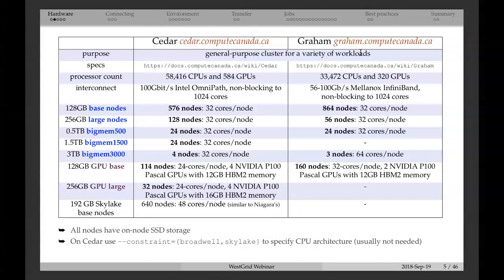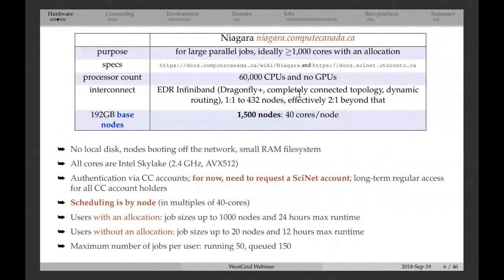We also have the GPU partition — if you're running code that makes use of GPUs, we have hardware for that. The very last row of the table shows the Skylake nodes on Cedar, so roughly half of Cedar is new Skylake processors. The details of setup on Niagara are somewhat different. Niagara is a new system, all Skylake processors, with 60,000 CPUs, meant primarily for large parallel jobs — no serial jobs — and there are quite a few differences in setup.